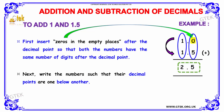Now we need to write the numbers such that the decimal points are one below another. By adding, 0 plus 5 gives 5. Keeping the decimal point, we need to add 1 plus 1, that is 2. So the answer is 2.5.